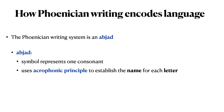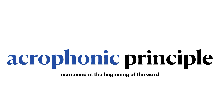The Phoenician abjad uses the acrophonic principle to establish the name for each letter. This means that each letter is given a name where the name starts with the sound that that symbol represents. The acrophonic principle says that when we give a name to a symbol, we use the sound at the beginning of the word that matches the symbol and the sound that symbol represents.